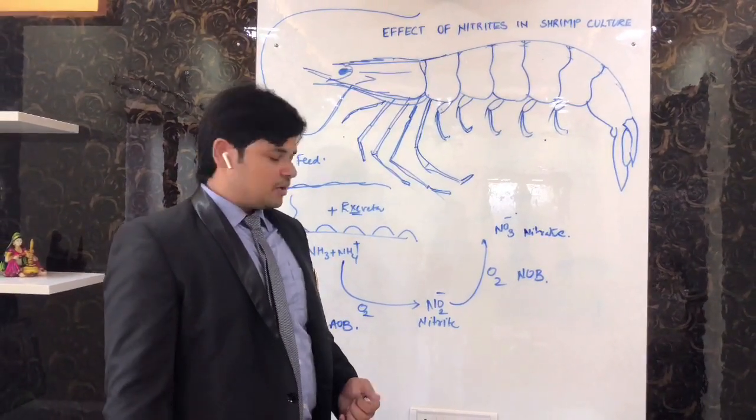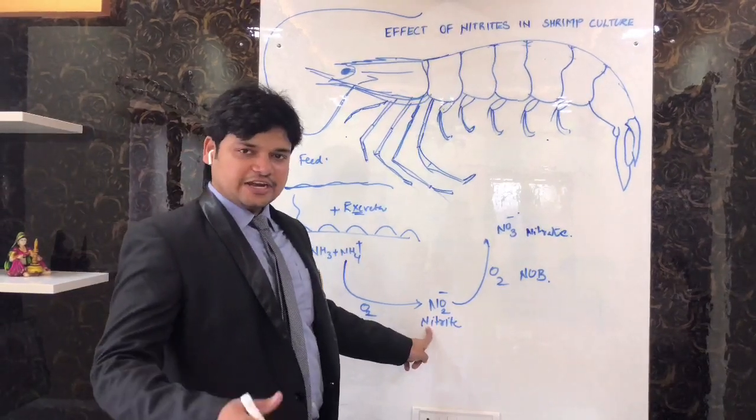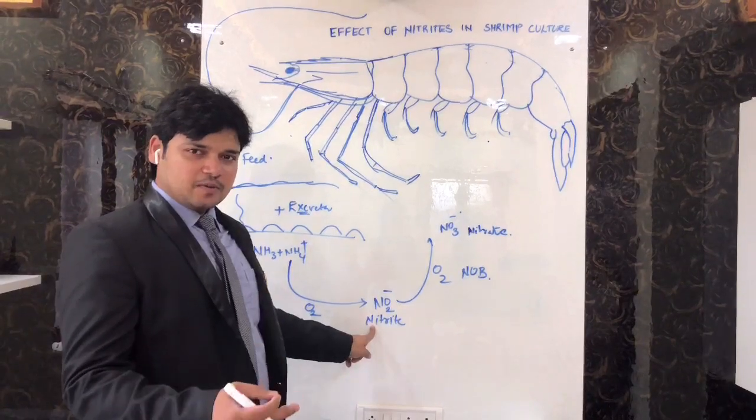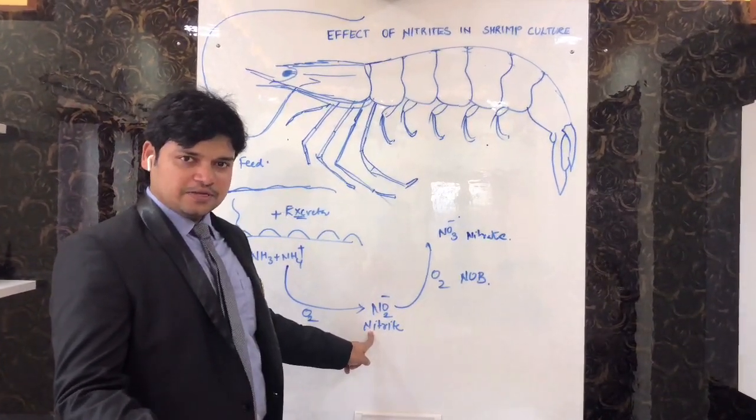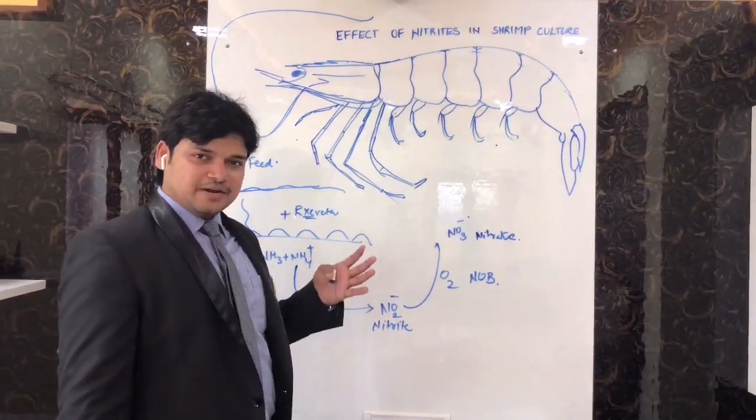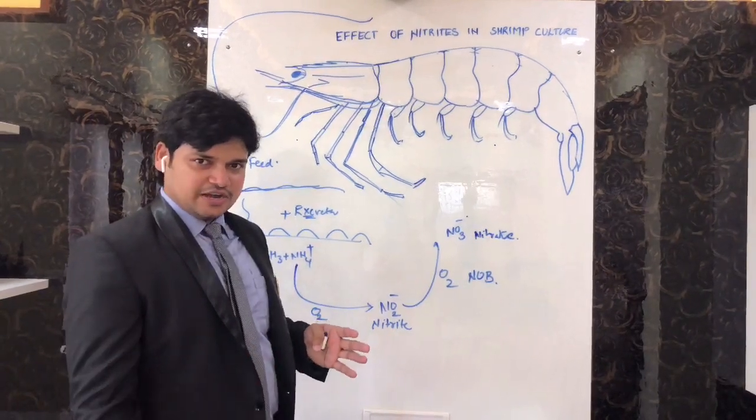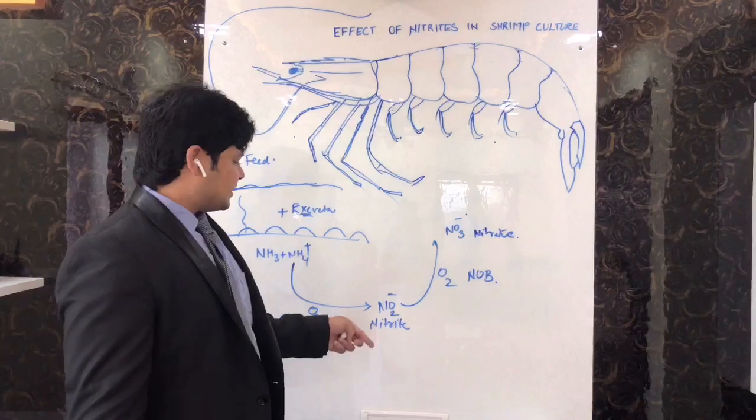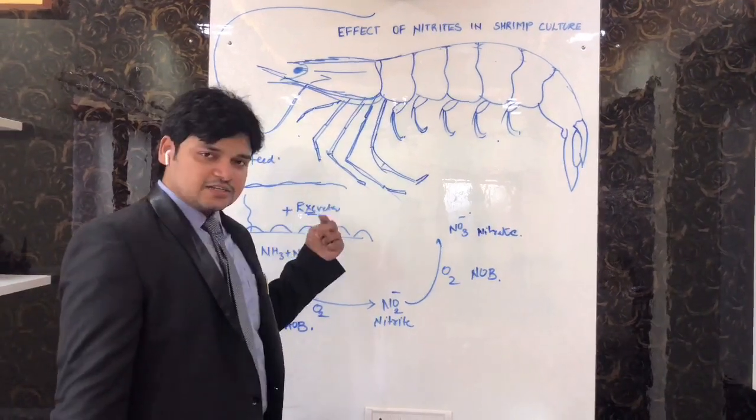But nitrite is harmful for both fish and shrimp. In case of fish, it reacts with the hemoglobin molecule, the iron molecule in the hemoglobin. Red blood converts to brown blood and the fish dies. It's not site specific but it attacks the immune system and circulatory system of the animal.